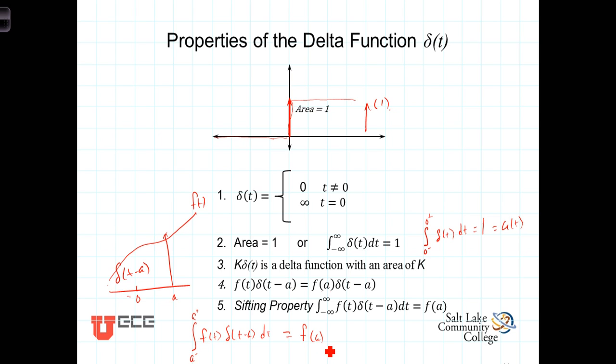We've already pointed out that the area, or the integral across the delta function is one, so this integral, then, becomes one, and we are left with f of a.